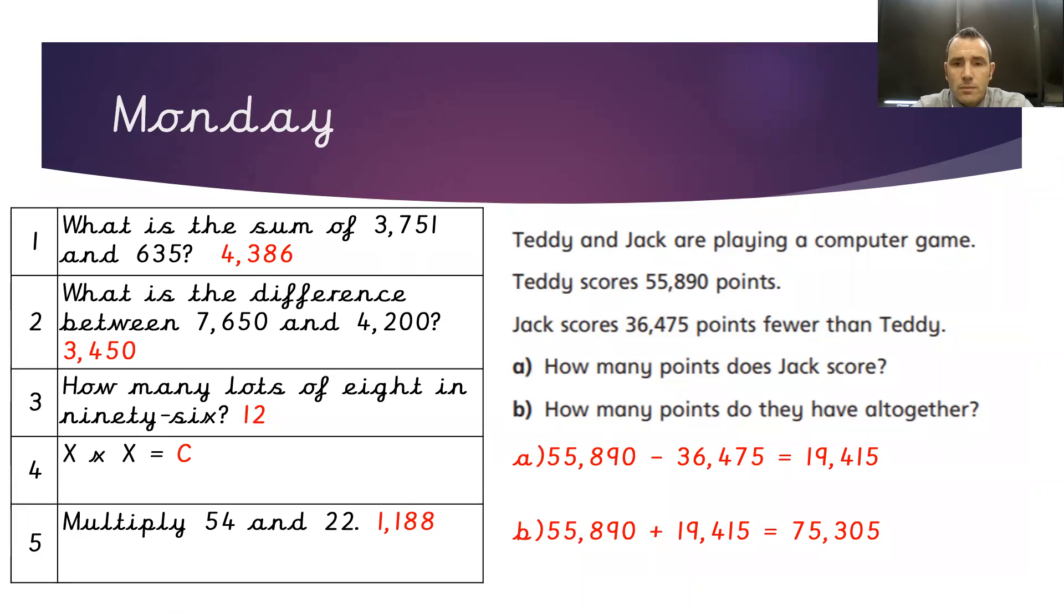Here are Monday's answers. Looking at our reasoning question for today, we've got Teddy and Jack playing a computer game. The question gives us the information that Teddy has scored 55,890 points and that Jack scores 36,475 points fewer than Teddy.